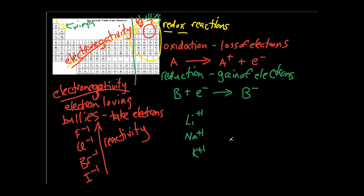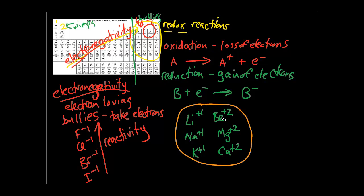Potassium is also plus one. What about the group twos? Beryllium, since it's not that electronegative, one of the more electronegative elements on the right is probably going to take its electrons. It has two to donate, so the charge is going to be plus two. Magnesium is going to be plus two, calcium is going to be plus two, and so on. So these group one and two elements are all wimps because they're going to be oxidized, while the group sixes and sevens are the bullies since they're going to be reduced.